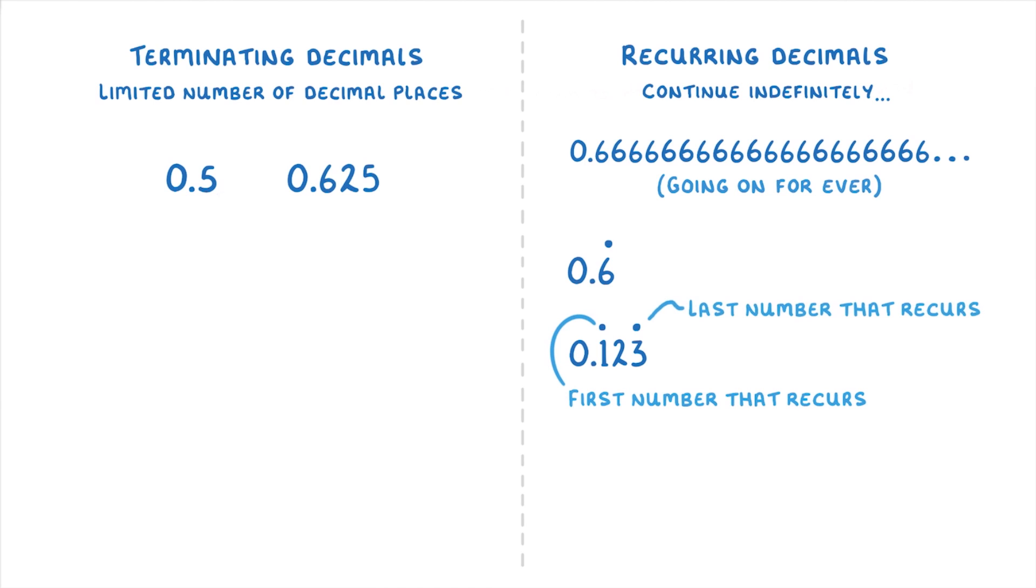As another example, in this number, it's the 4-7-8-1 which is recurring, so we could rewrite it as 0.4781 and then place dots above the 4 and the 1.